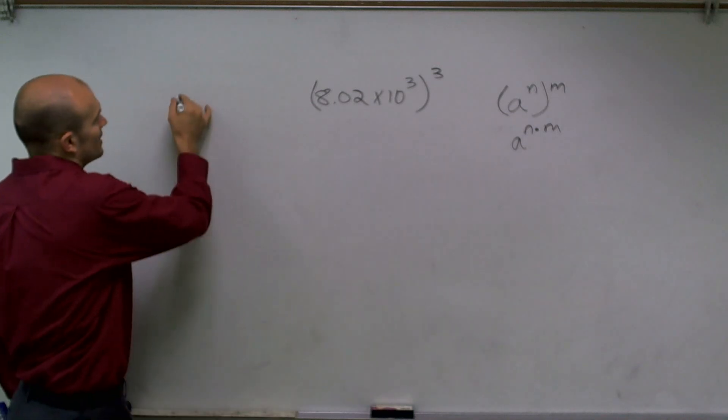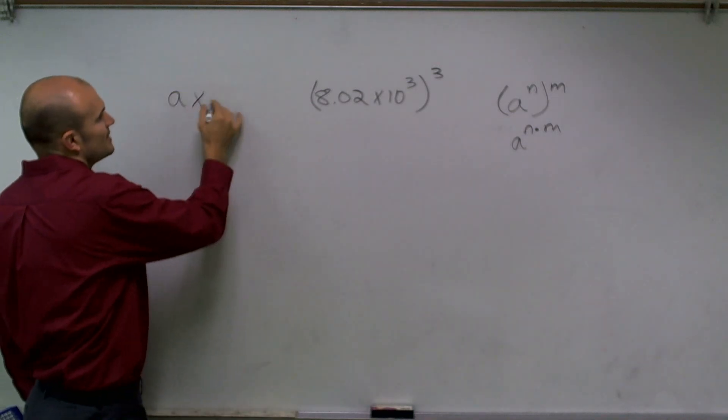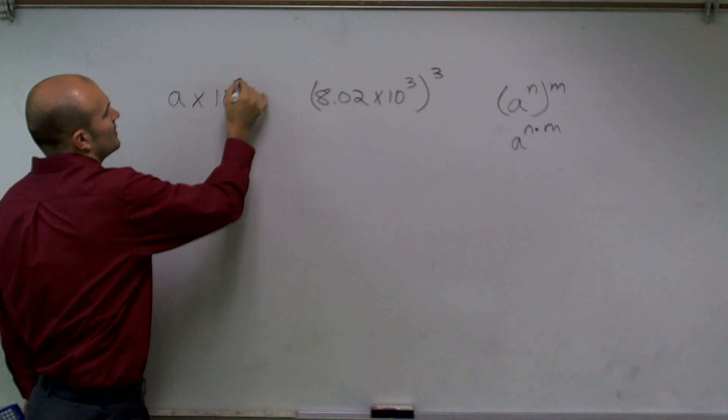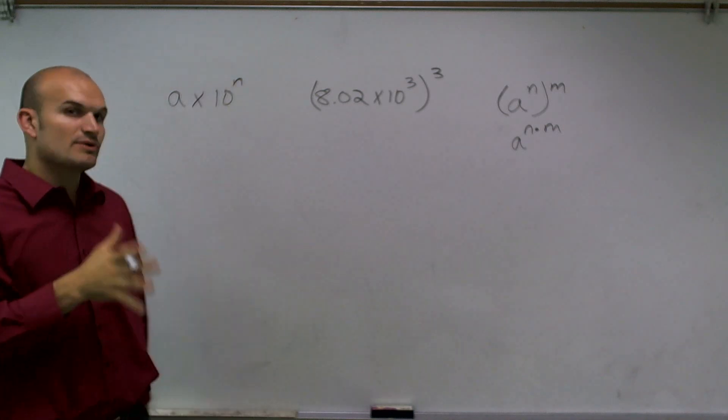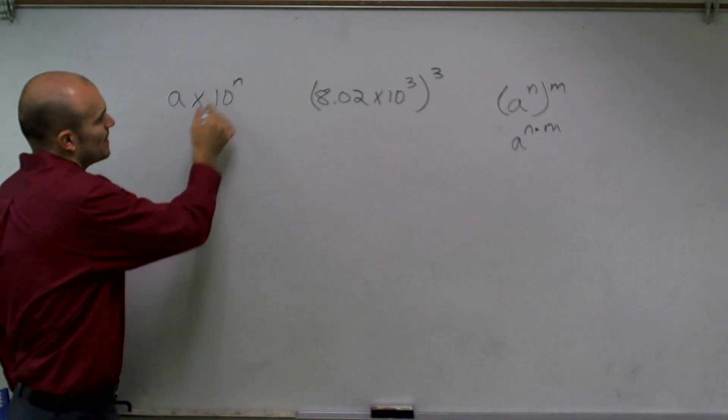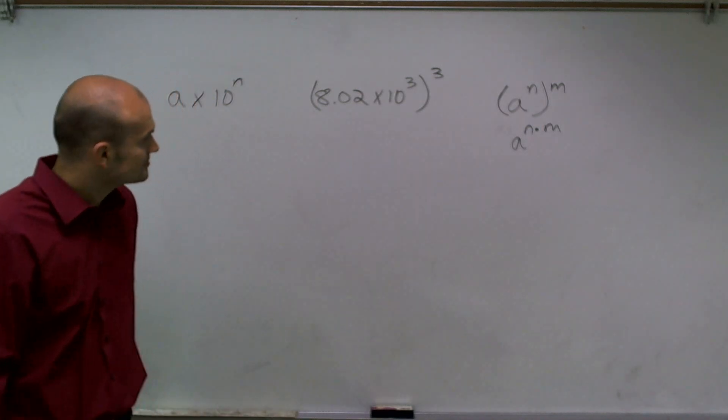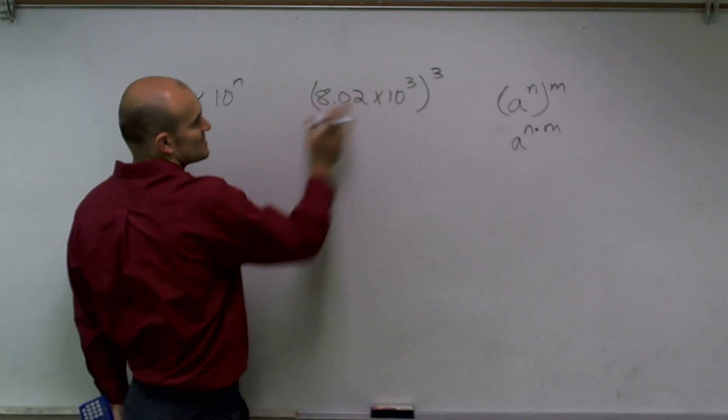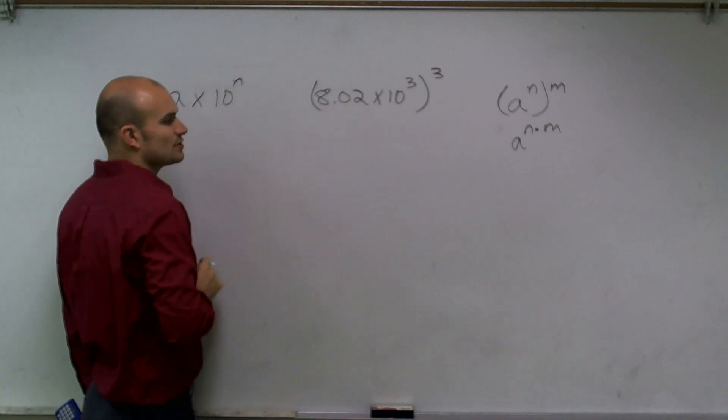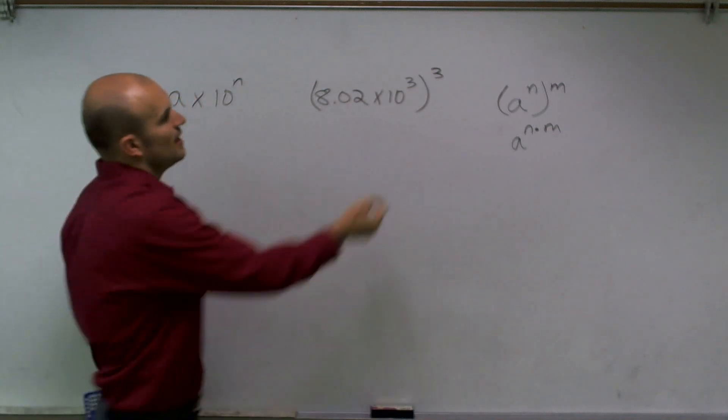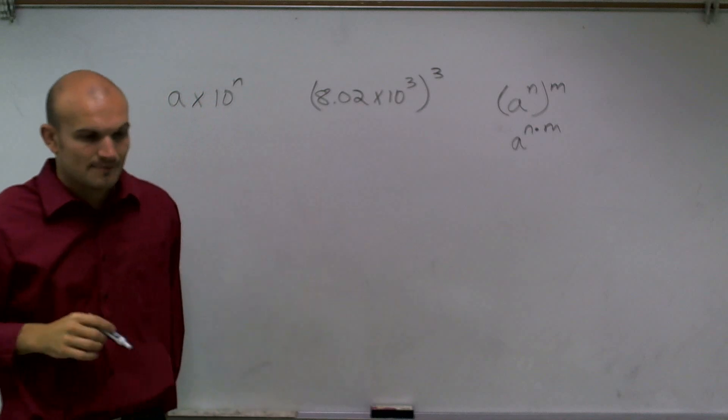And the next thing I also want you to remember is a number in scientific notation is any number a that's between 1 and 10 that's multiplied by 10 raised to a power n that is an integer. So you can see this is obviously in scientific notation. 8.02 is between 1 and 10, and then our n is an integer, 3.